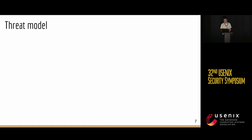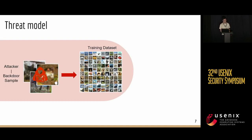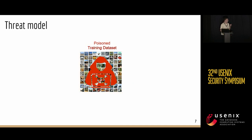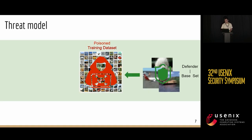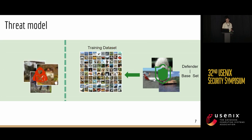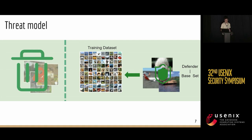Let's first introduce the threat model for ASATS. We consider an attacker who can create a poisoned training dataset by poisoning a portion of the training data. The defender has access to this full poisoned training dataset, and additionally has a clean unlabeled small base set to support poison sample detection. The defender's goal is to reliably identify the backdoor samples in the training data so they can be removed before training to mitigate the attack's impact. This is a challenging task since backdoors are intentionally designed to be tricky to detect.